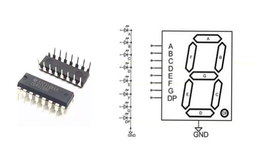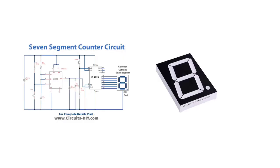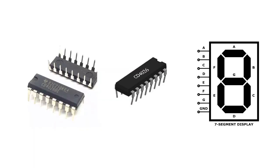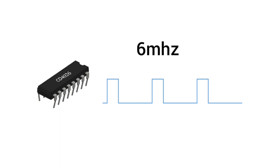Features of the CD4026 decade counter for 7-segment display: Can drive a common cathode 7-segment display directly. Easy to interface with a timer or microcontrollers, TTL compatible. Can be easily cascaded with more ICs to display a higher range of numbers. Maximum clock frequency: 6 MHz.